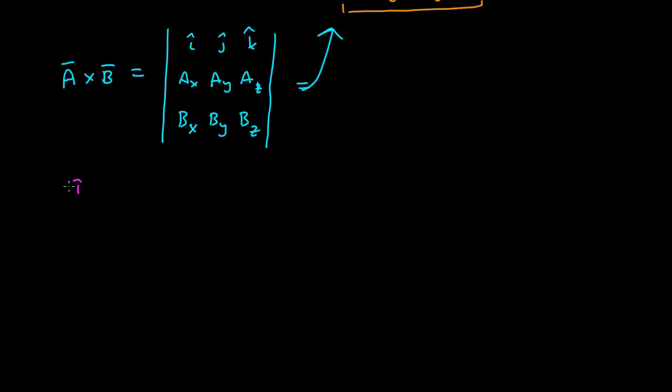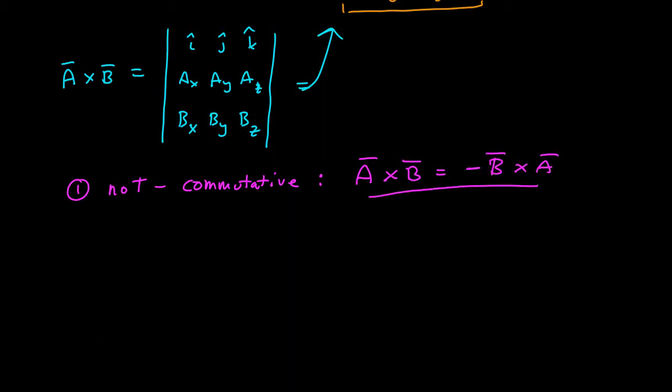One of the most important features that distinguishes it from the scalar product is it's not commutative, which means A cross B is not equal to B cross A. In fact, if you were to calculate it, A cross B is equal to negative B cross A. That's one important distinction. The order of the operation matters for the cross product.